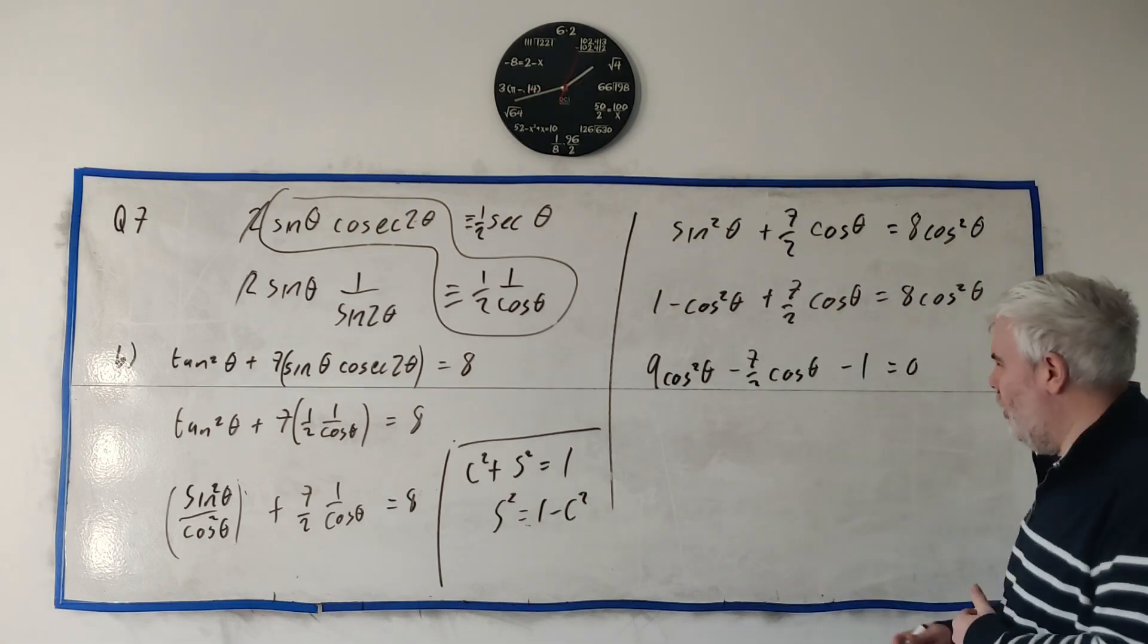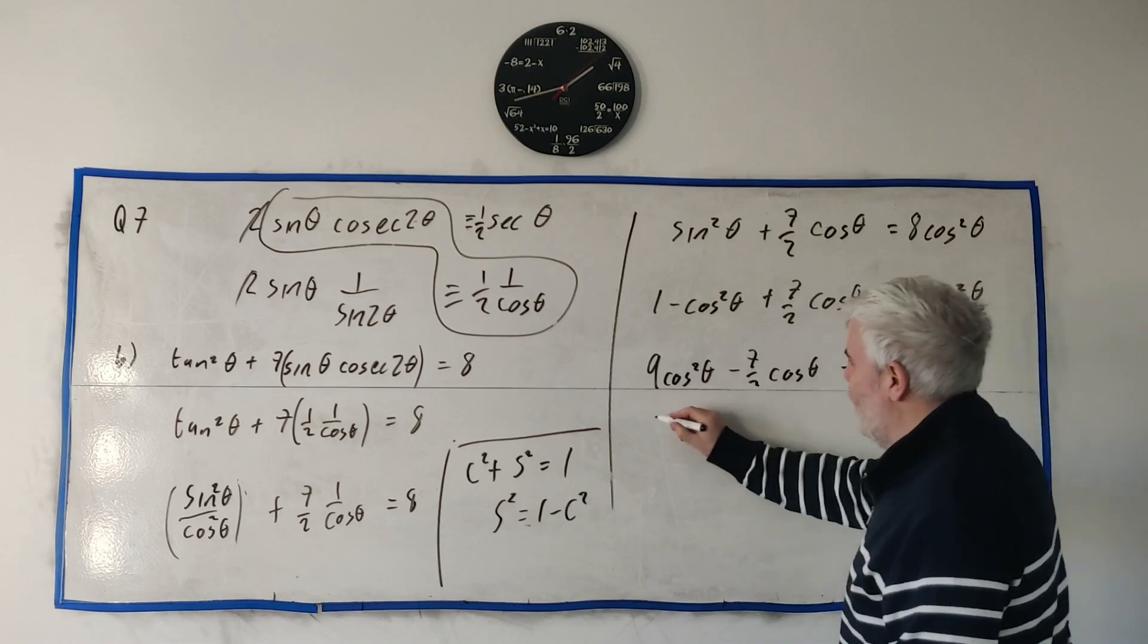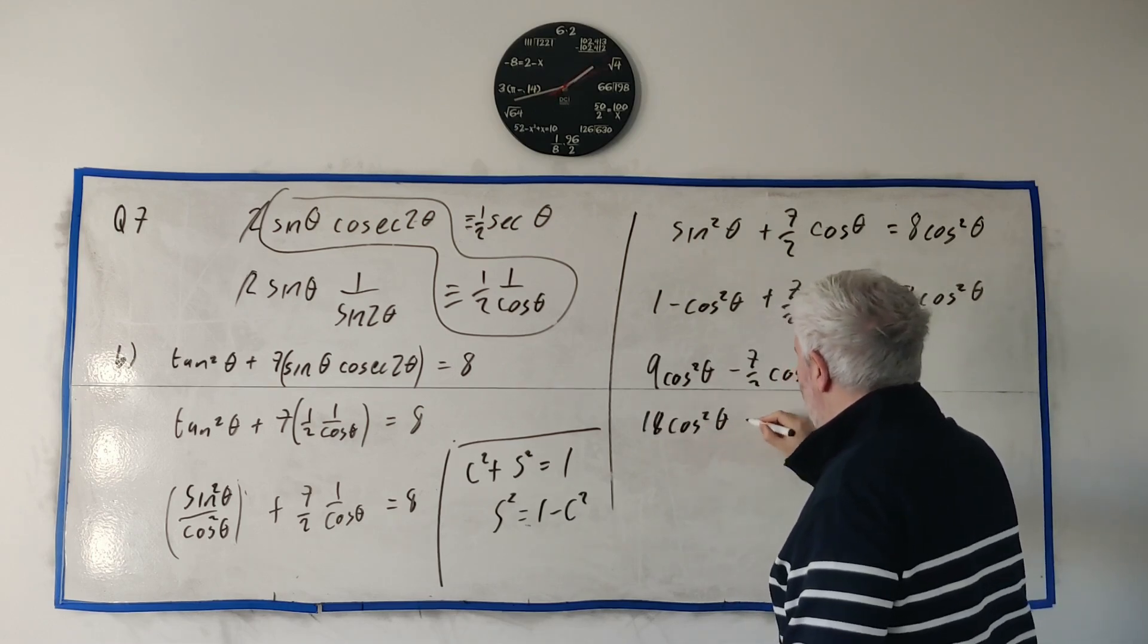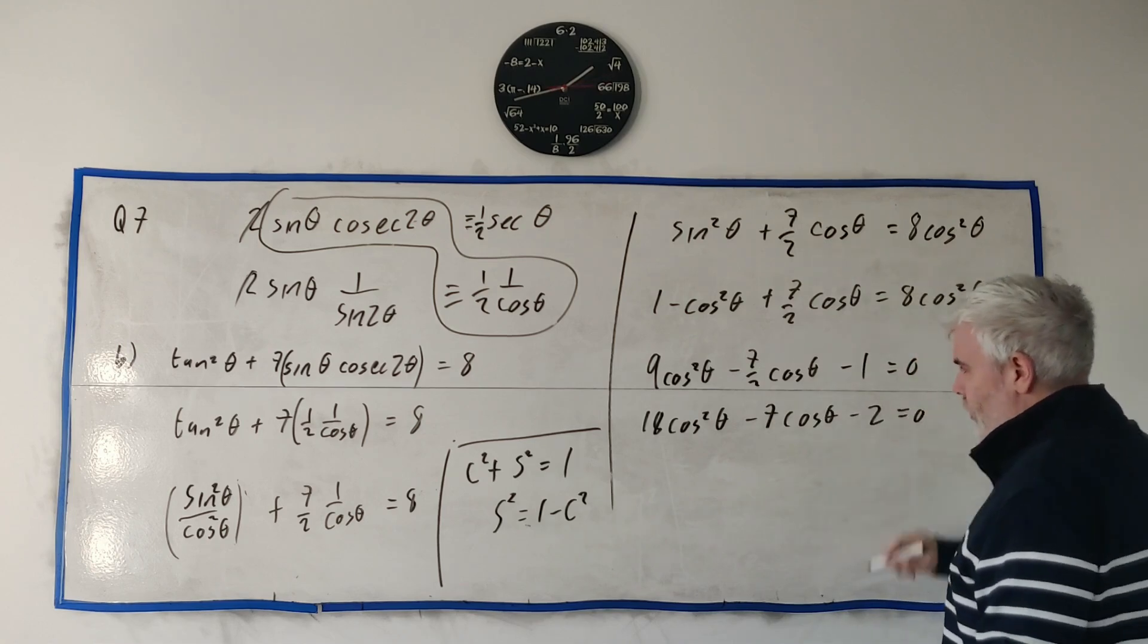That's just a quadratic. Let's move everyone over to the right to make the squared part positive. So we'll get 8 plus 1, we'll get 9 cosine squared θ. We'll get minus 7 over 2 cosine θ. And we'll get minus 1, all equals 0.